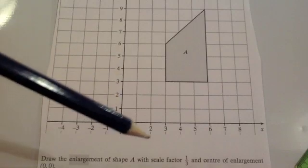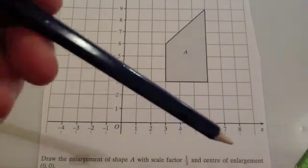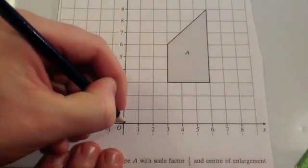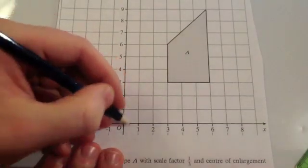So what you're going to do is first of all find out where the center of enlargement is. So the center of enlargement is (0,0). So I would put a sort of a cross there to show you where the center of enlargement is, so it's here at the origin.